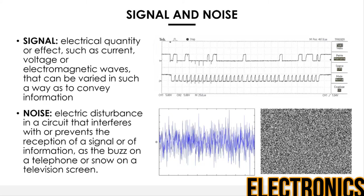Current and voltage are not fixed quantities — they can and usually do change with time inside a circuit. An electrical signal is an electrical quantity, such as current, voltage, or electromagnetic wave, that can be varied in such a way as to convey information. Here you can see two examples captured from an oscilloscope, an instrument used to see how voltage varies over time. The voltage is going up and down in a somewhat predictable way — this is what we call an electrical signal.